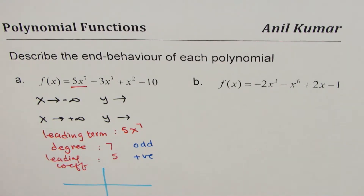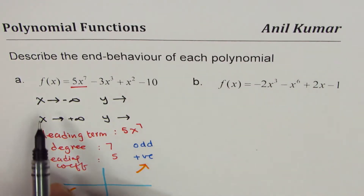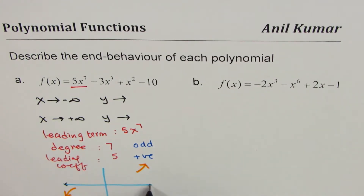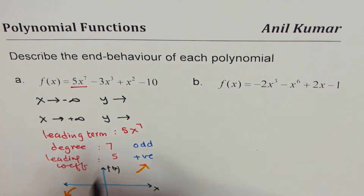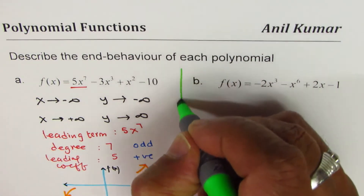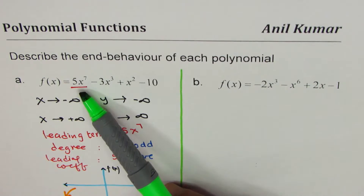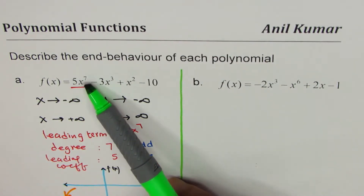A positive leading coefficient means the right side is up, and an odd degree means opposite ends. That gives you the end behavior. So we can write: if x approaches negative infinity, y approaches negative infinity; and if x approaches positive infinity, y approaches positive infinity. To summarize the steps: identify the leading term, then the leading coefficient and the degree of the polynomial — that determines the end behavior.